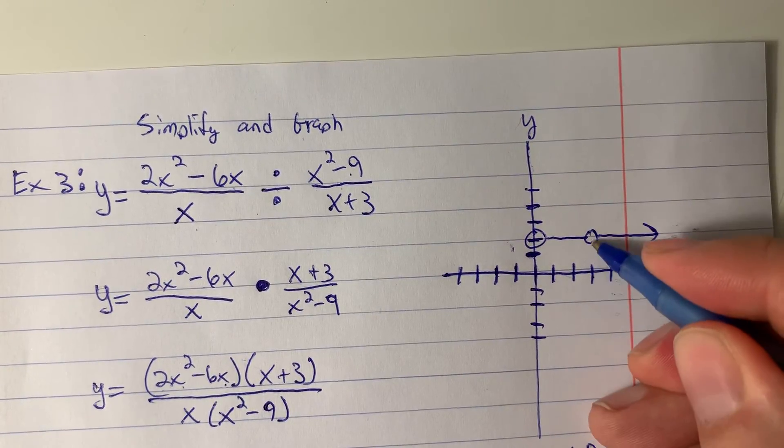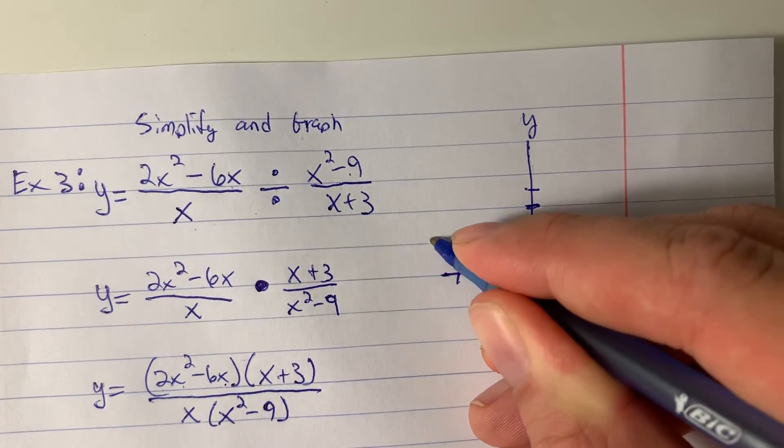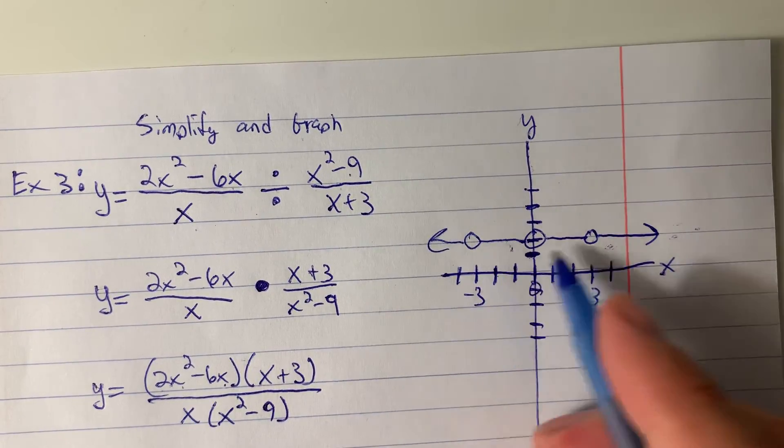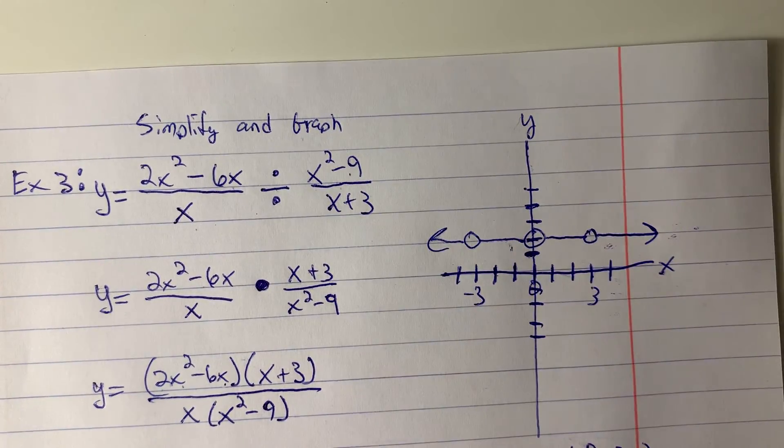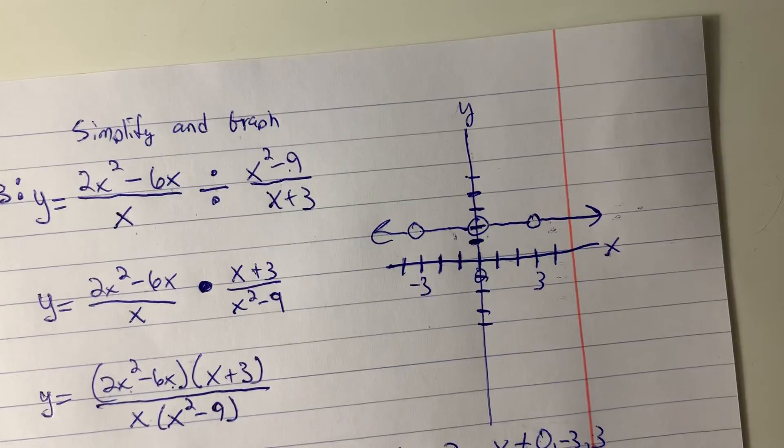We also have an undefined value at x equals 3. There is no value when x is 3 and when x is negative 3. So when x is negative 3, when x is 0, and when x is 3, there isn't a value. So it ends up making a very simple function, but that has three holes in it, or three removable discontinuities.